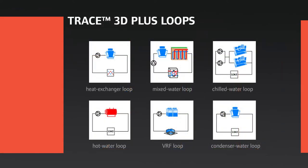There are six different types of loops selectable in TRACE 3D+: heat exchanger loops allow you to transfer loads between loops; a mixed water loop is the condenser loop from a water source heat pump system, typically including a boiler and a cooling tower; a chilled water loop has chillers; and a hot water loop has heating equipment such as a boiler. VRF is unique in that the loop being modeled is a refrigerant loop, with the plant housing unloading curves for the condensing equipment. Finally, condenser water loops reject energy from a building to heat rejection equipment such as a cooling tower.